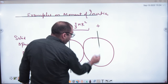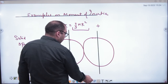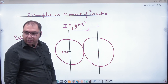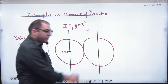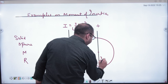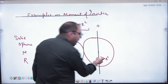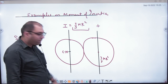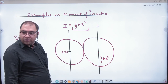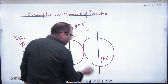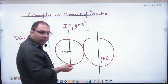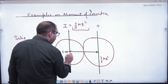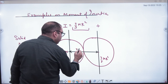Next, the second sphere. The moment of inertia of the second solid sphere about its own center is also 2/5 mr². But you have been asked about this main axis. Since the second sphere's center is not on that axis, you need to apply the theorem of parallel axis. Because the two axes are parallel, the perpendicular distance between them is 2r.